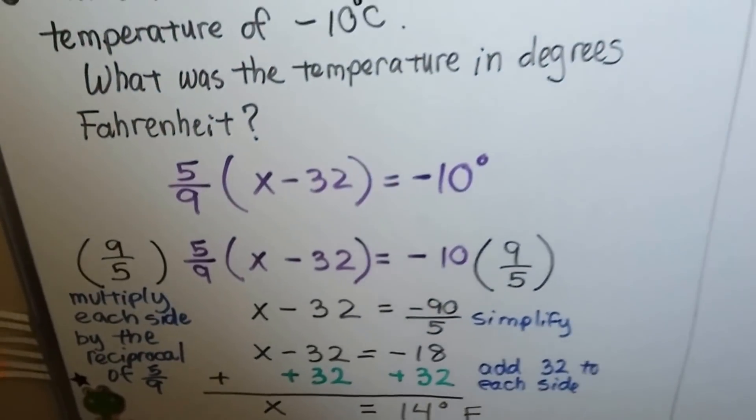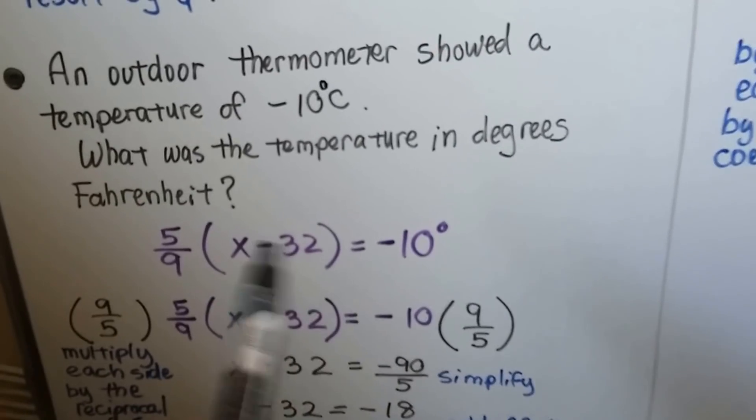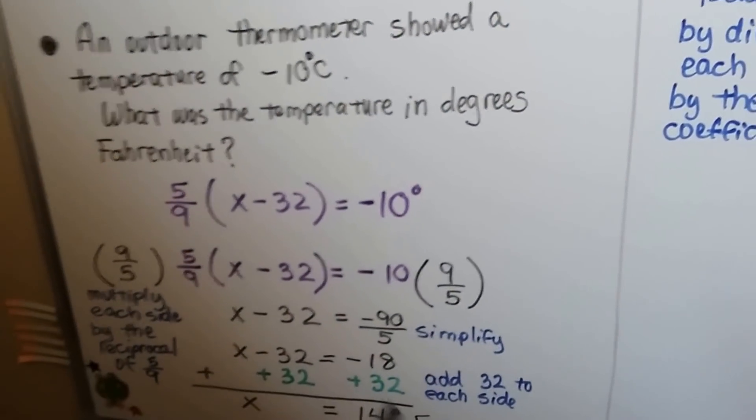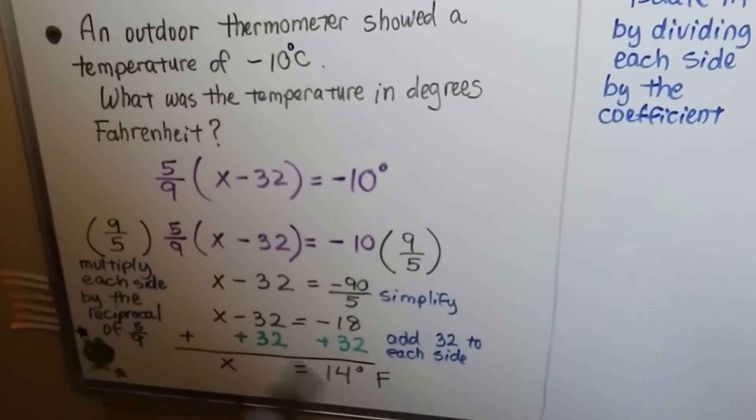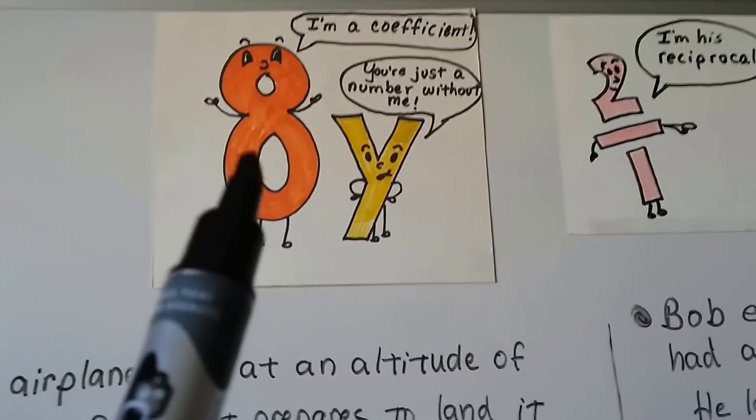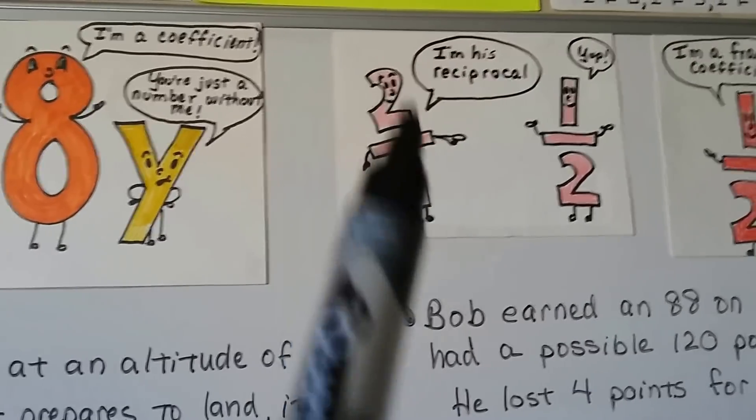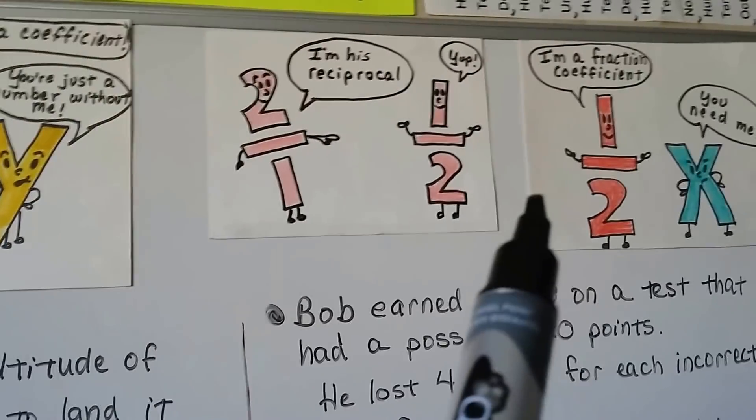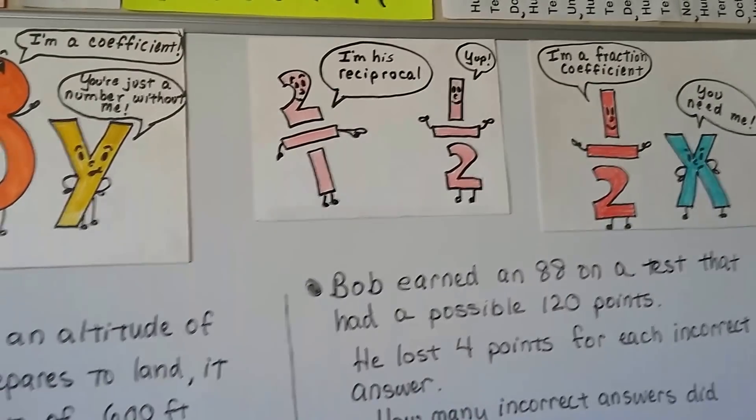There is actually a formula to find Fahrenheit that's a little bit different than this, but they're using the Celsius formula to find it, just to show you how to use inverse operations. Remember that the number that's in front of the variable is the coefficient. The reciprocal is an upside-down version of the fraction.